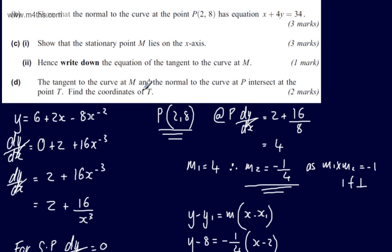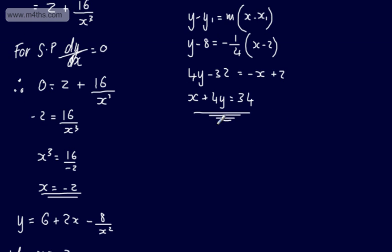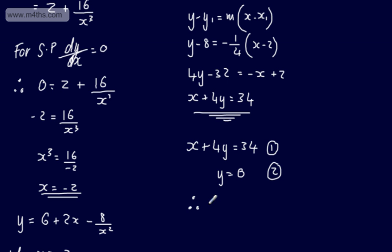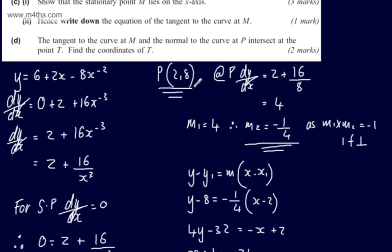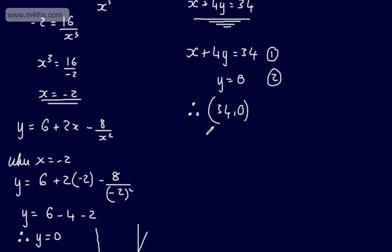In part D, for two marks, the tangent at M and the normal at P intersect at point T, and we need to find the coordinates of T. We have two simultaneous equations: x + 4y = 34 (equation 1) and y = 0 (equation 2). Substituting y = 0 into equation 1 gives x = 34. Therefore T has coordinates (34, 0).